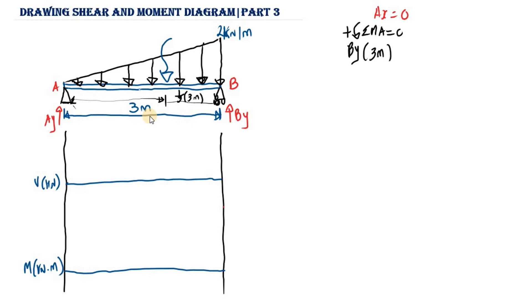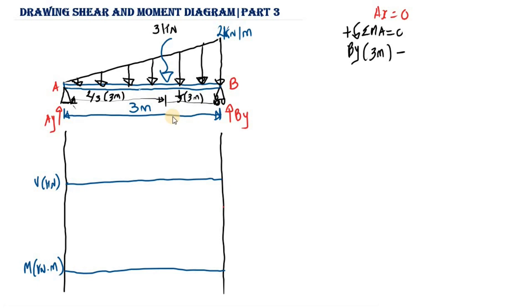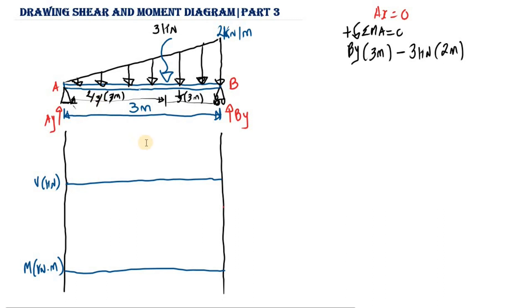The distance from the resultant force to the pin support at A is two-thirds of the length, which is two-thirds of 3 m — the threes cancel and we are left with 2 meters. The resultant is 3 kN acting downward relative to point A, which causes a clockwise rotation, so it is negative: negative 3 kN multiplied by 2 m.